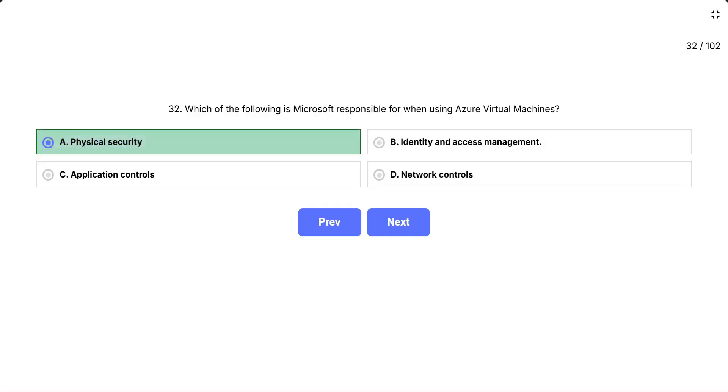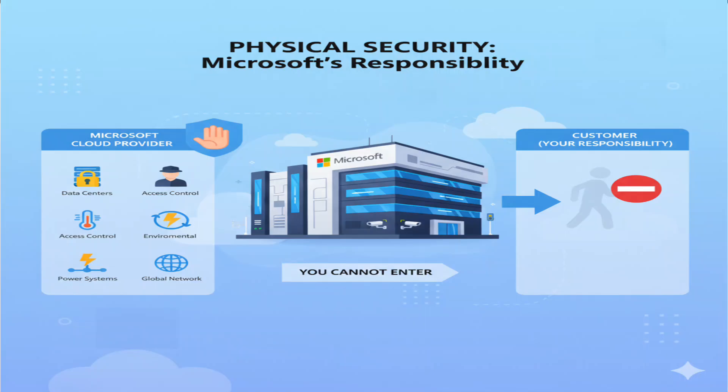Let's understand the shared responsibility model step by step. Physical security is always Microsoft's responsibility because they own and operate the data centers where your virtual machines run. Microsoft handles everything at the physical layer: securing the buildings, managing access to server rooms, environmental controls, power systems, and physical network infrastructure. You can't walk into a Microsoft data center — that's their job to protect.